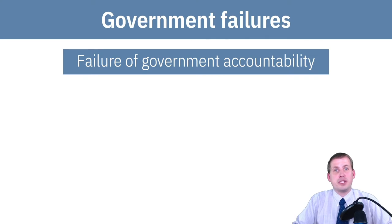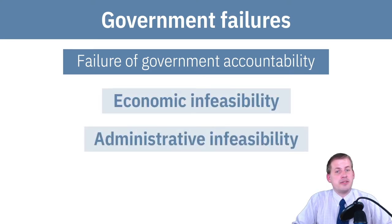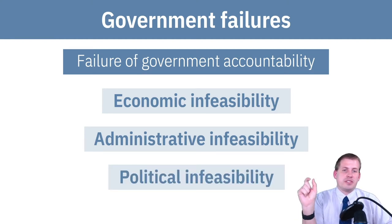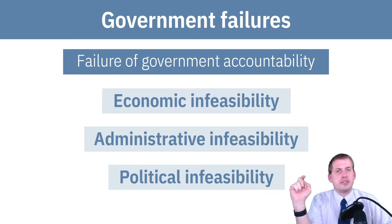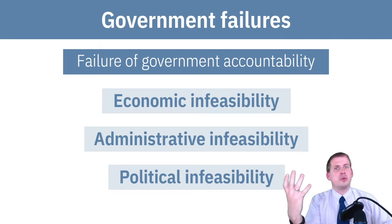There are three general reasons for government failures, as the core readings discuss. You can have economic infeasibility, administrative infeasibility, and political infeasibility. Any of these levels — economic, administrative, or political — can mess up government accountability and make it so the government won't actually do what it was supposed to do.